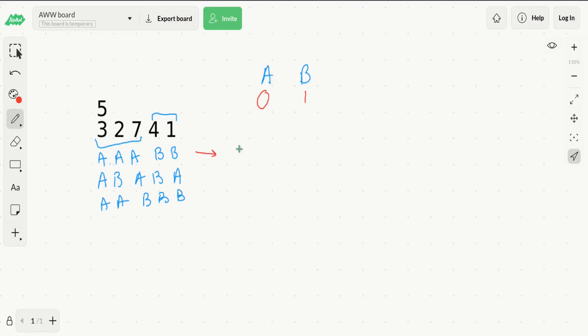This string becomes 0, 0, 0, 1, 1. This one becomes 0, 1, 0, 1, 0. And this one becomes 0, 0, 1, 1, 1.